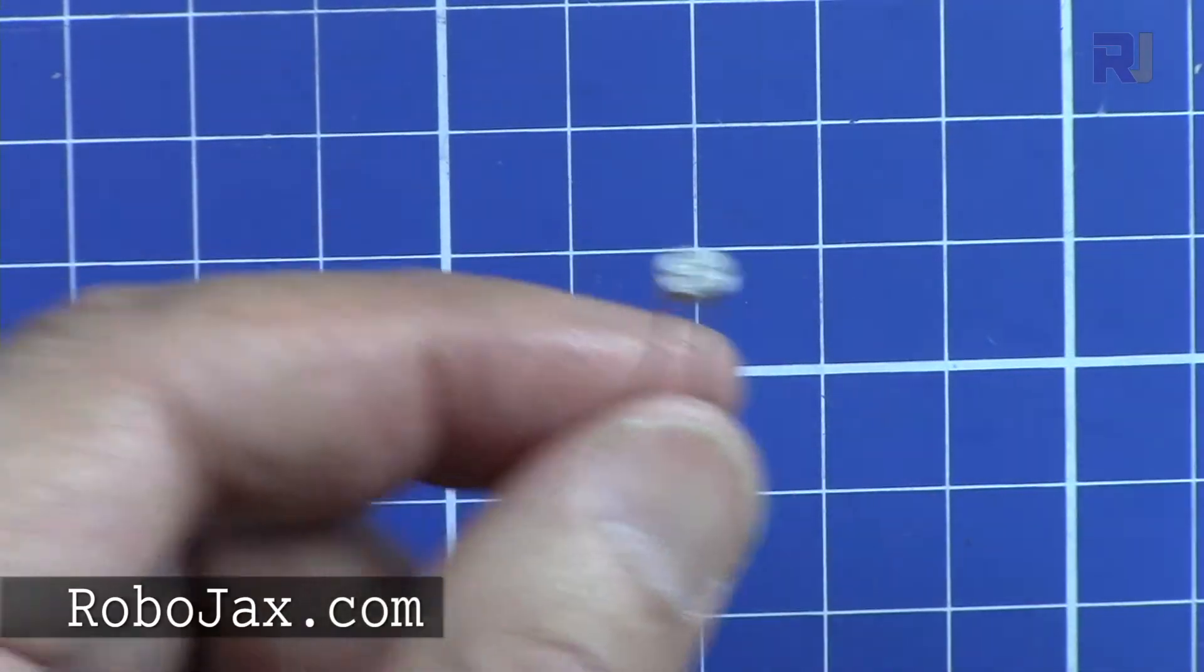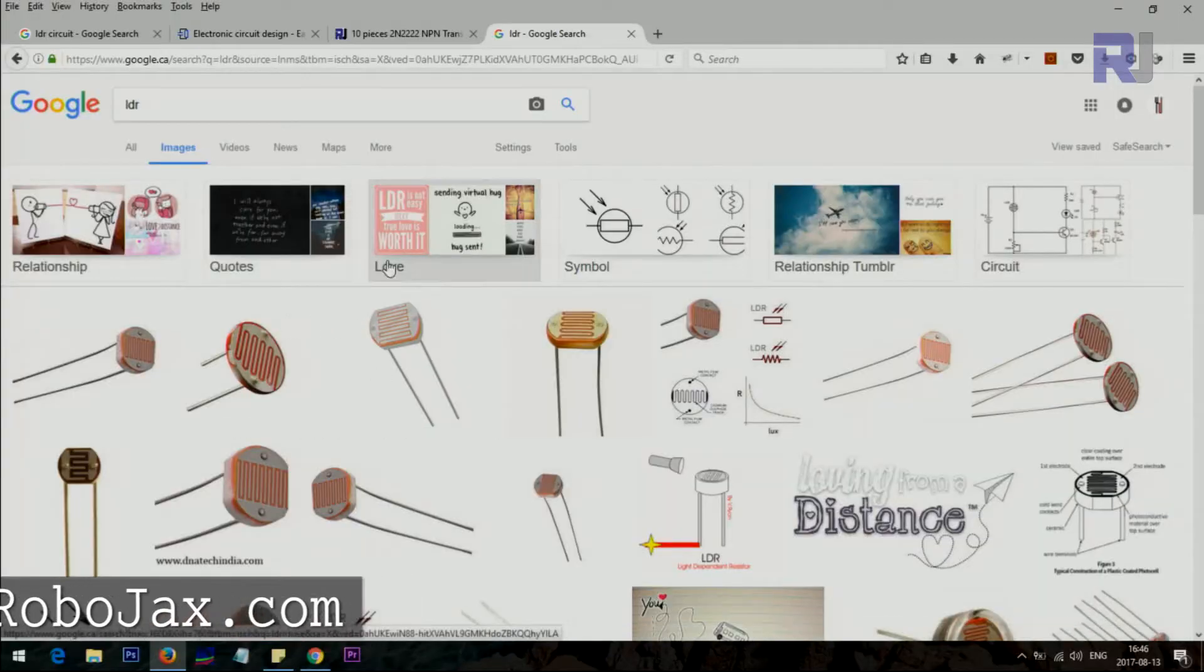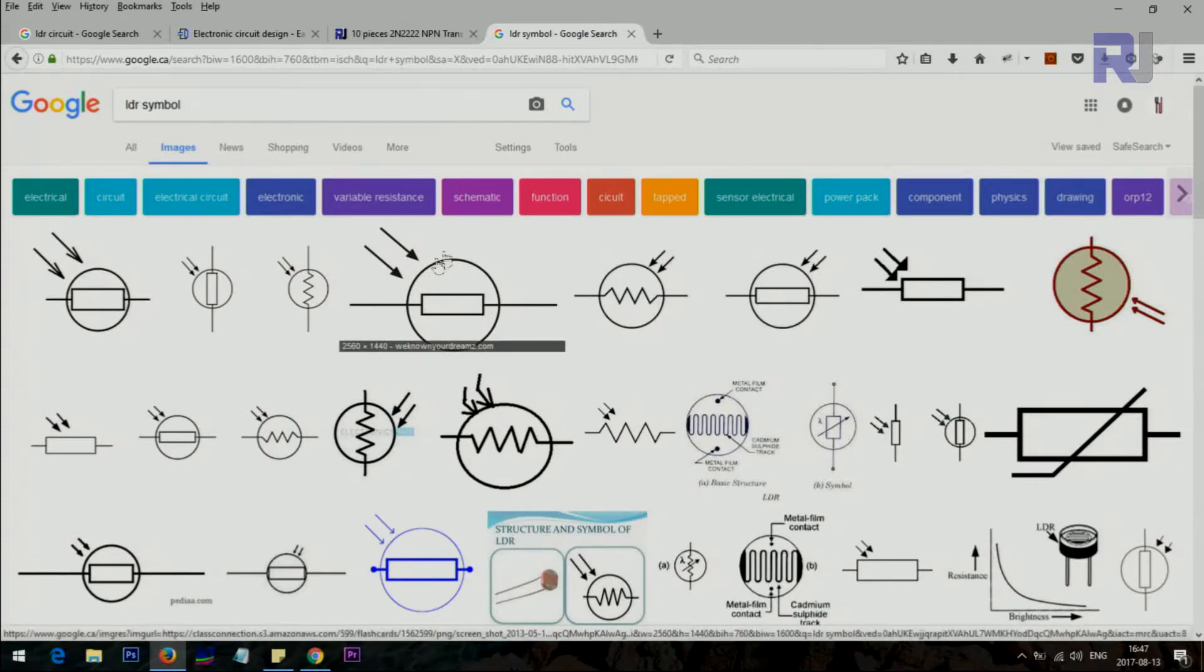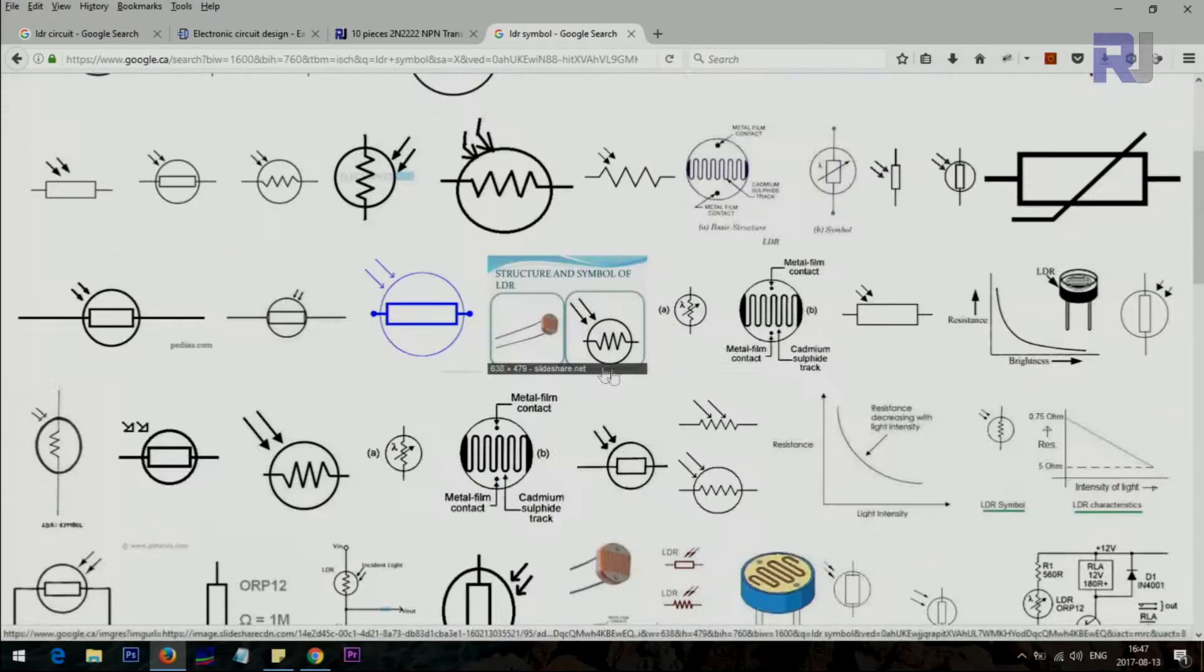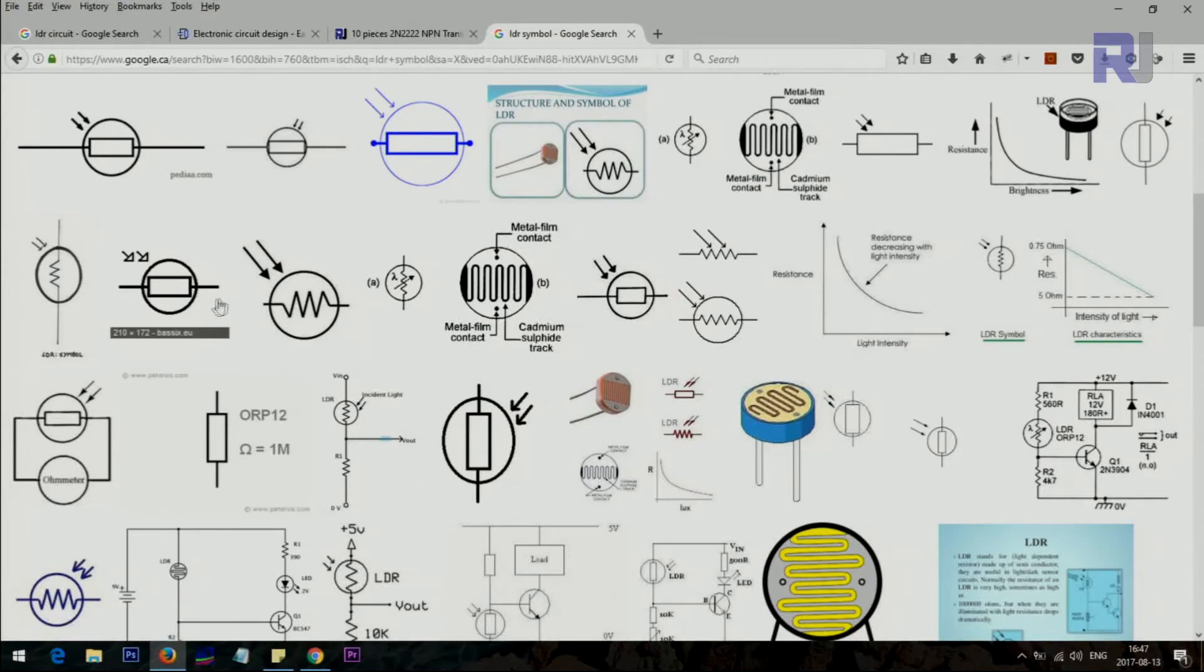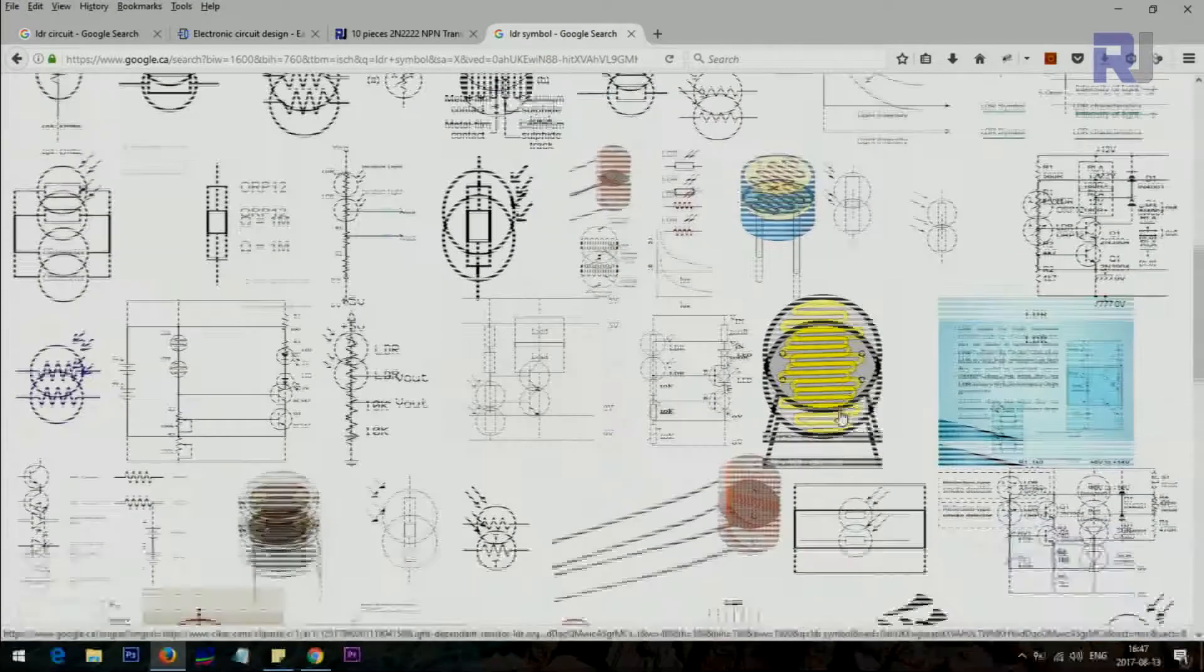I did a search on LDR. As you can see here, these are the symbols shown. You'll see it as a resistor, or a resistor surrounded by a circle with two arrows showing the light is coming. You might see different symbols for it, but all of those refer to the same thing, which is LDR or light dependent resistor.